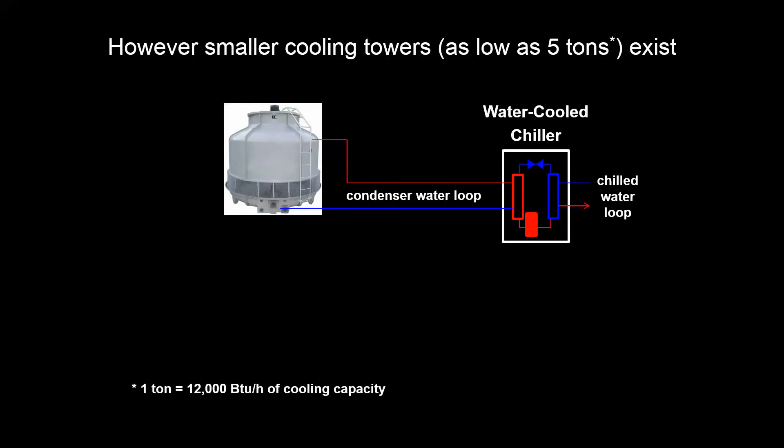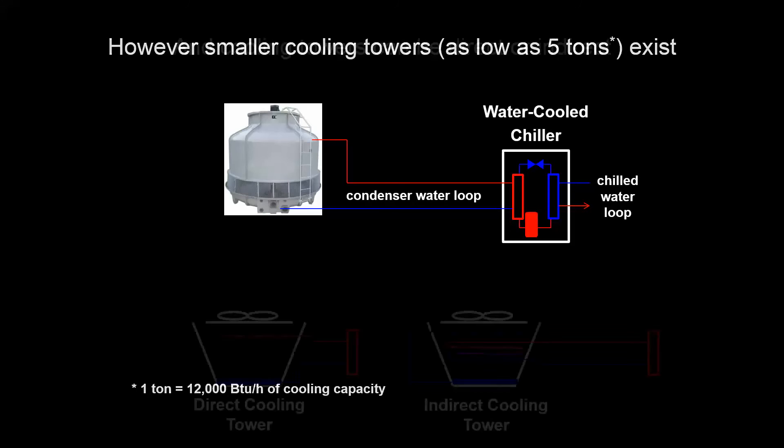Cooling towers can also come in a small variety, such as this space shuttle-looking device here, though they're not seen quite as much. At about 5 tons or less is where you might not have a chance of seeing cooling towers like this. Just to establish a ton as a unit of measure going forward — it's equivalent to 12,000 BTUH of cooling capacity.